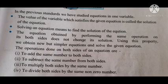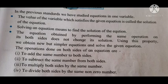The operations are: first, to add the same number to both sides; second, to subtract the same number from both sides; third, to multiply both sides by the same number; and last, to divide both sides by the same non-zero number.